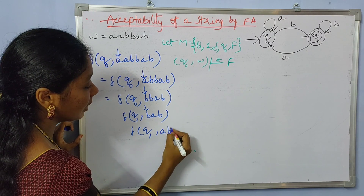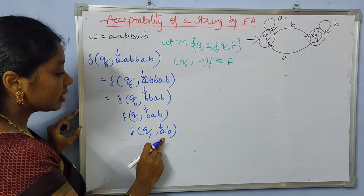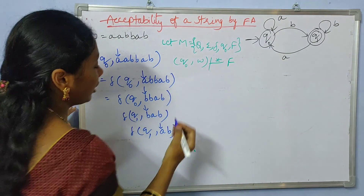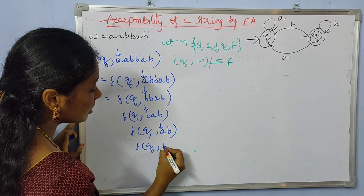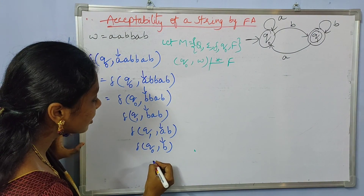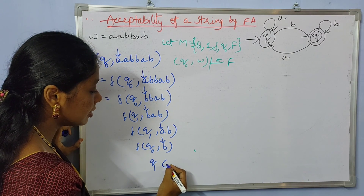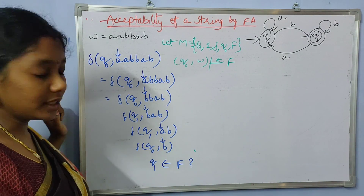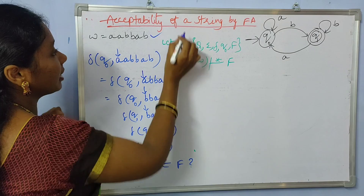The next input symbol is 'a'. From q1 with input 'a', we go to q0. The next input symbol is 'b', and from q0 with input 'b', we go to q1. The final resultant state is q1. We check whether q1 belongs to the final state — since q1 is the final state in our example, the string is accepted by the finite automata.